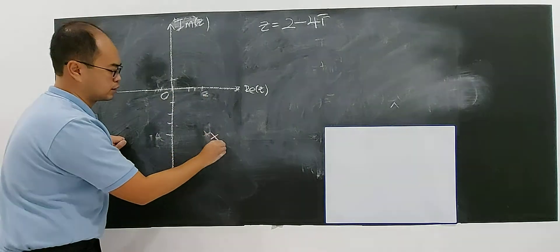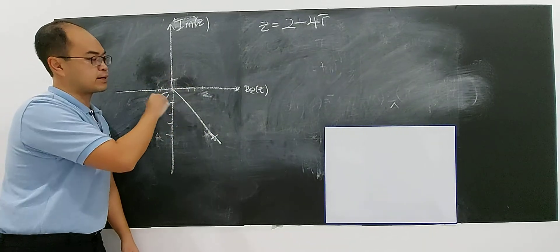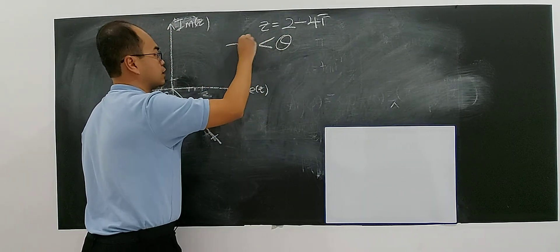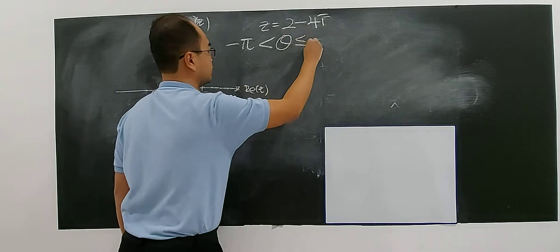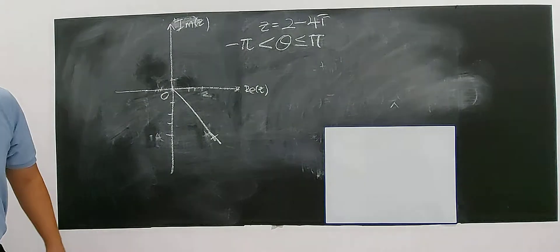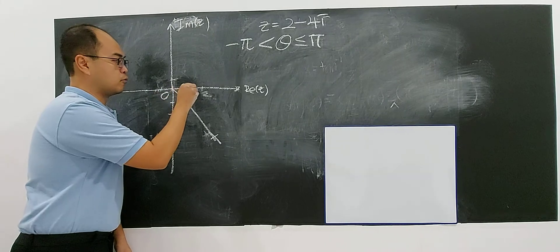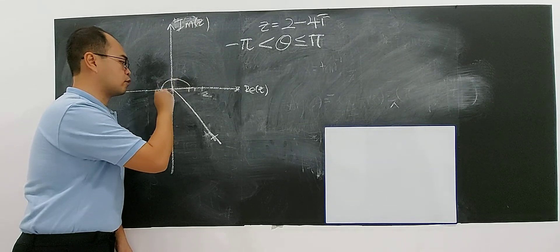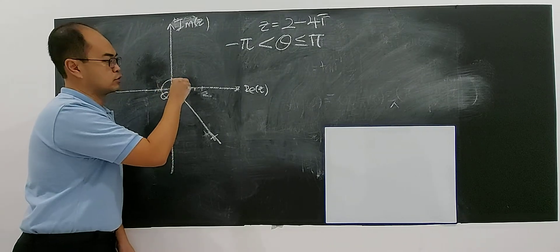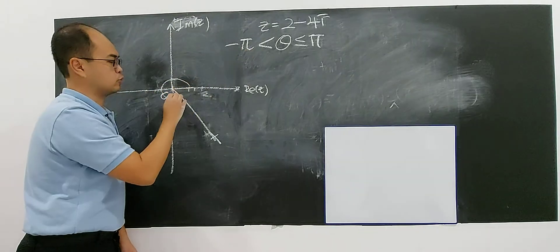We talk about argument. If you're in the fourth quadrant, your theta — your argument — has to take a value between negative pi and pi. I cannot move theta from here in the anti-clockwise direction. This is actually more than 270, which is already more than 180. So it shouldn't happen.